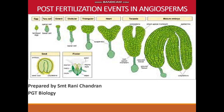In post-fertilization events, endosperm development takes place before embryo development. This is because endosperm is a nutritive tissue and nourishes the developing embryo. Endosperm develops from the primary endosperm nucleus, which is triploid — that is, 3N number of chromosomes. During fertilization, when the second male gamete fuses with the two polar nuclei, a triploid nucleus is produced, and that is the primary endosperm nucleus.